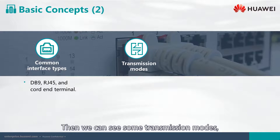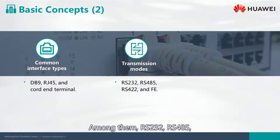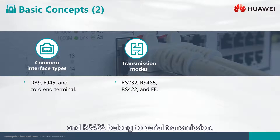We can see some transmission modes, such as RS-232, RS-485, RS-422, and FE. Among them, RS-232, RS-485, and RS-422 belong to serial transmission. FE is the transmission of network.